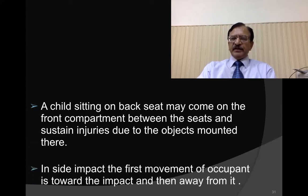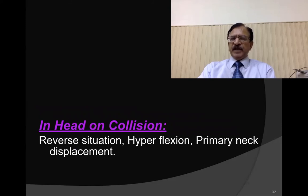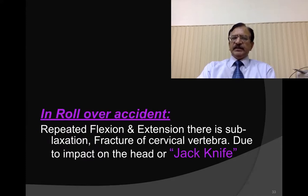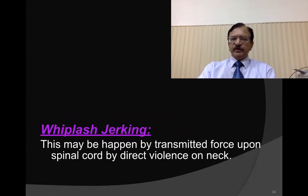Regarding inside impact, the first movement of the occupant is towards the impact and then away from it. In head-on collision, the reverse situation occurs — there is hyperflexion and primary neck displacement. In rollover accidents, repeated flexion and extension causes subluxation and fracture of the cervical vertebra due to impact on the head or jackknife. Whiplash injury may also happen by transmitted force upon the spinal cord by direct violence to the neck.